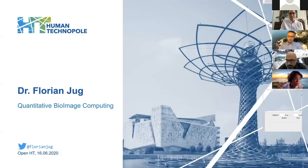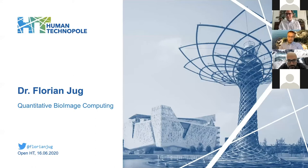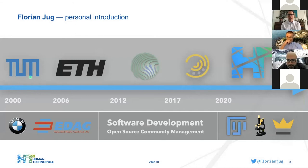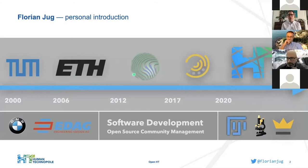I'm very happy to introduce myself and my plans at the Human Technopole. I started studying computer science at the Technical University of Munich, then moved to ETH where, as a computer scientist, I did computational neuroscience — my first contact with a biological mindset. I then moved on to the Max Planck Institute for Molecular Cell Biology and Genetics, where my understanding of molecular biology and genetics was deepened considerably.